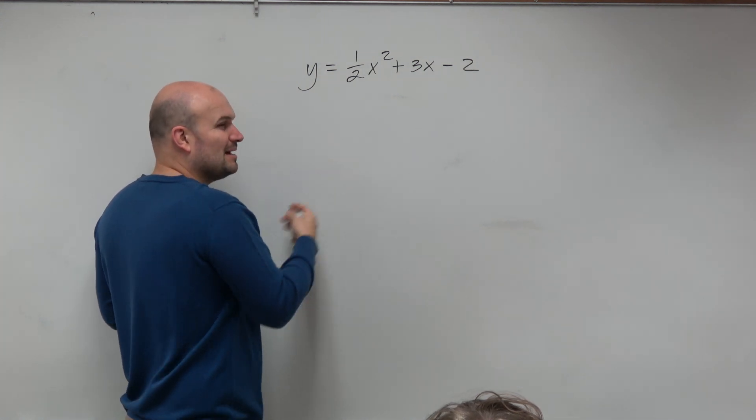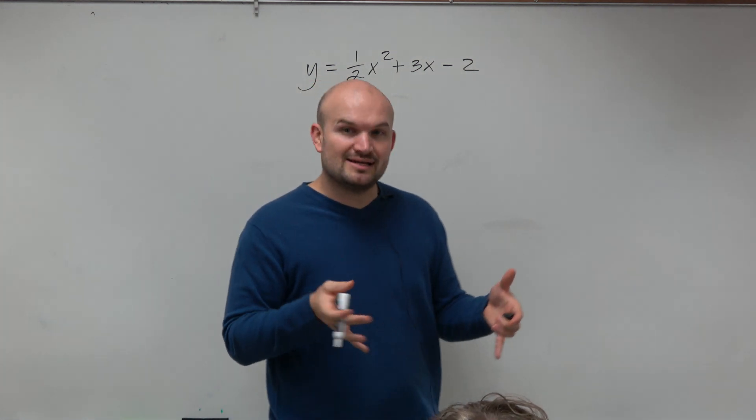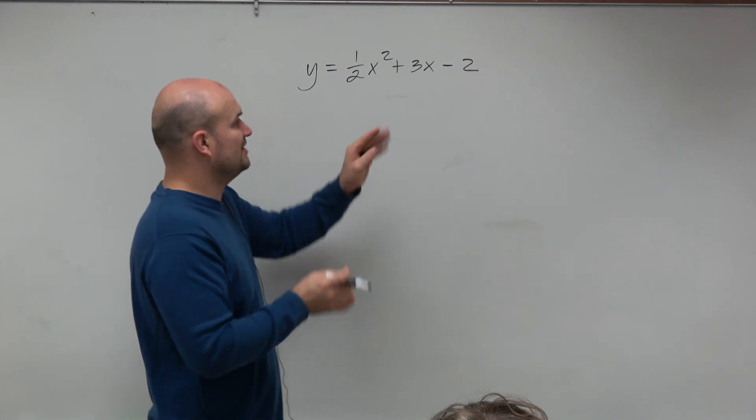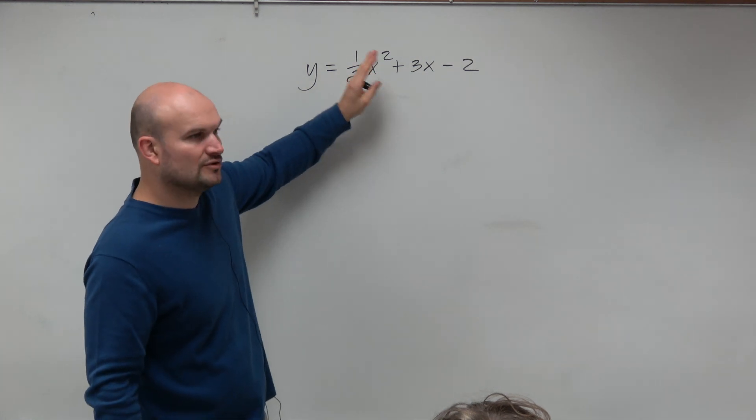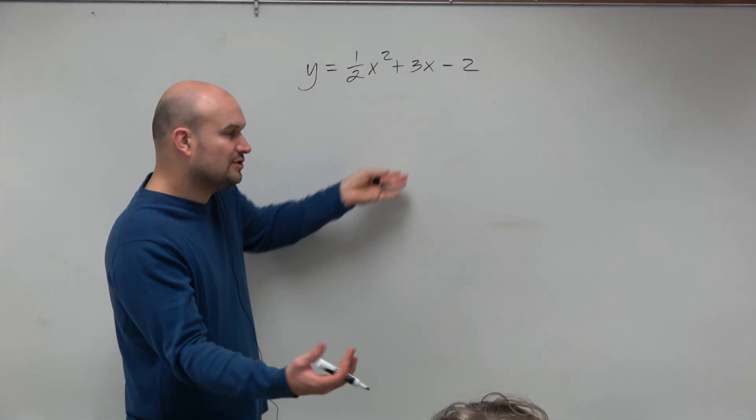I can't create a perfect square trinomial with this 1 half there. And even if it was a 4, I probably would still just want to factor it out anyways, because it would be much easier to just create the perfect square trinomial when my x squared coefficient is equal to 1, even though 4 could work.